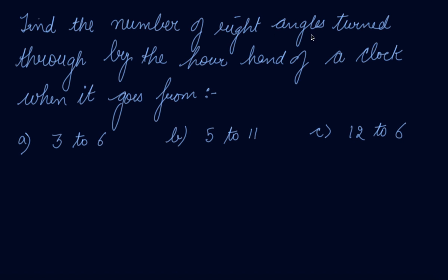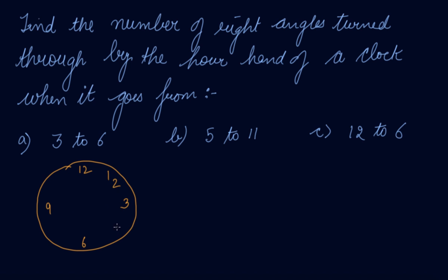The next question is: find the number of right angles turned through by the hour hand when it goes from 3 to 6. The hand is at 3 and it goes to 6. It has made one right angle.